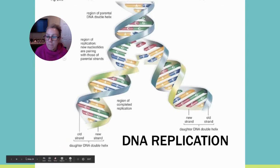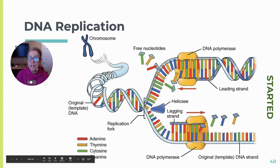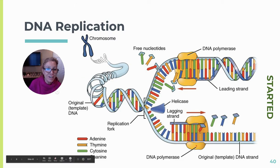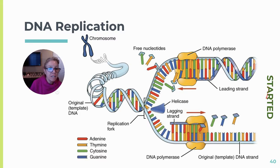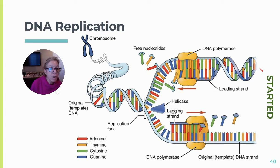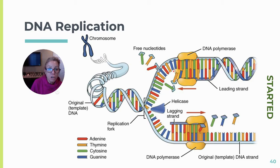DNA replication: the original DNA unwinds and unzips and serves as template strands to form new DNA. This is called semi-conservative replication. The replication starts and works toward what's called the replication fork — where the strand splits like a fork in the road. The leading strand has a 3' end so DNA polymerase III can just take off, building the new dark-blue strand toward the replication fork.